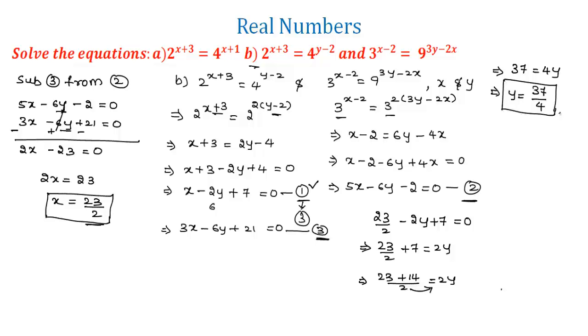So finally we get x = 23/2 and y = 37/4. This was a basic introduction on how to solve examples on real numbers. Hope you understood the concept. Do like this video. Thanks for watching, have a good day.